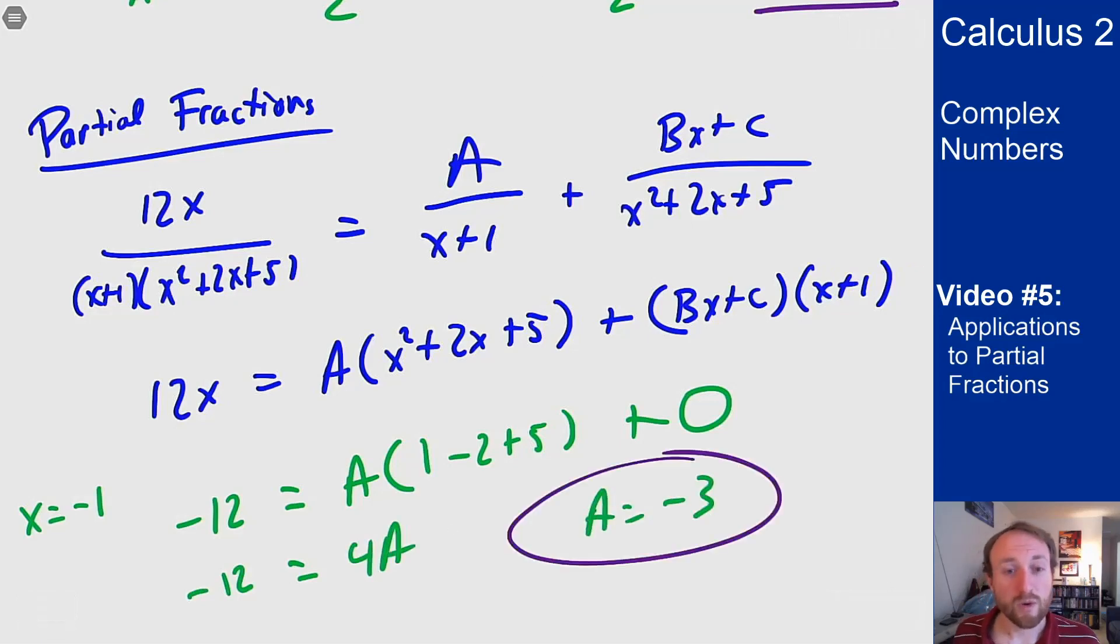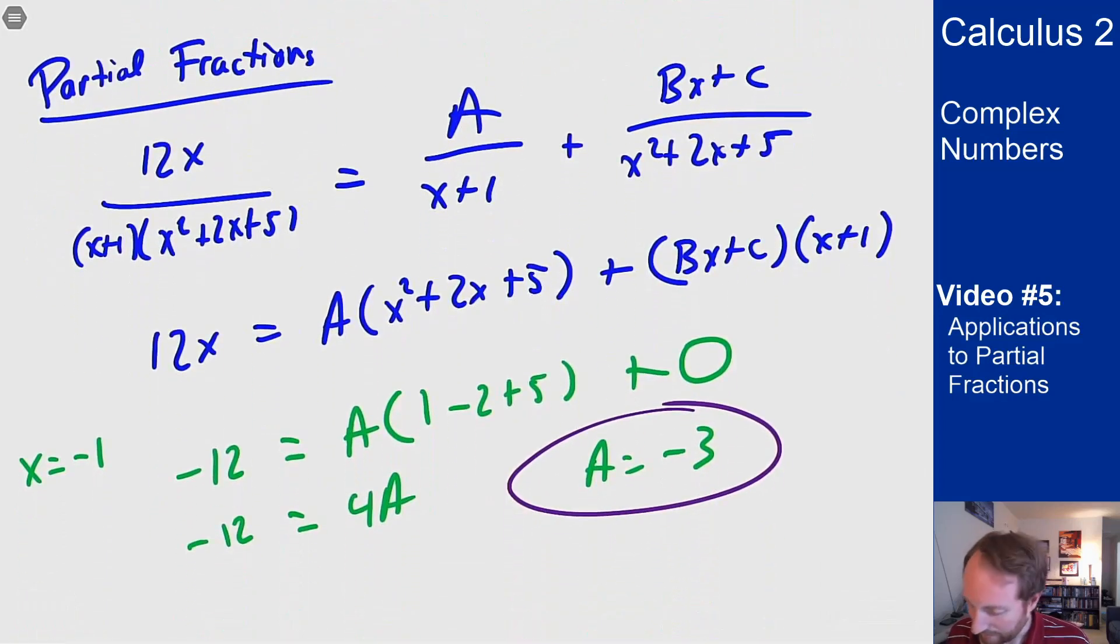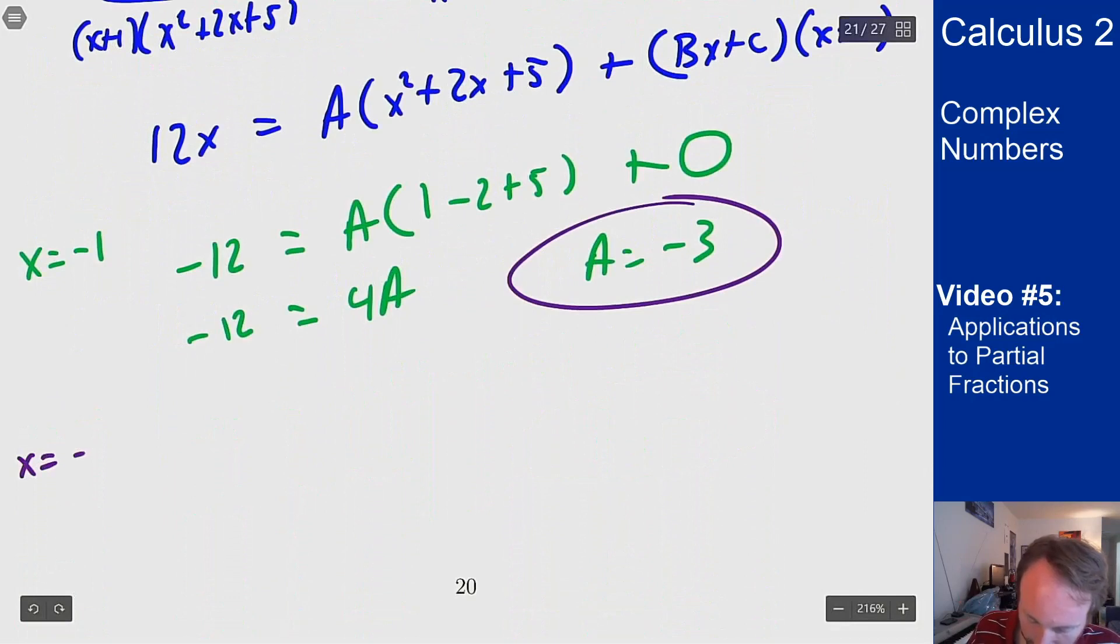Now doing this the old way we want to plug in probably 0 and get rid of the Bx term, solve for C and then plug in some other number and write the whole expression and see what we get. But we now have complex numbers. I'm going to plug in the root here which is -1 + 2i into here and see what I get. x equals -1 + 2i. I'm going to plug in the plus version here but I only need one root here because I'm going to get two equations.